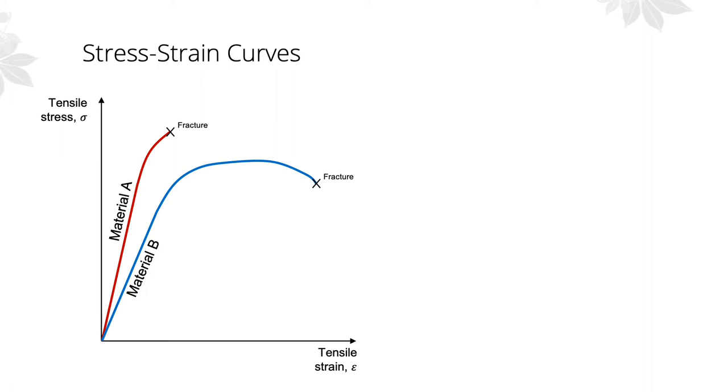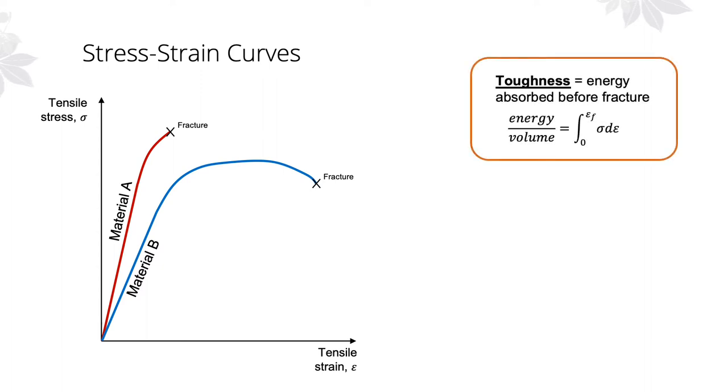So, which material would we prefer? If we want to avoid fractures, we might choose the material that is able to absorb the most destructive energy before fracturing. In material science, this is defined as toughness, which we can calculate by integrating the area under the stress strain curve.